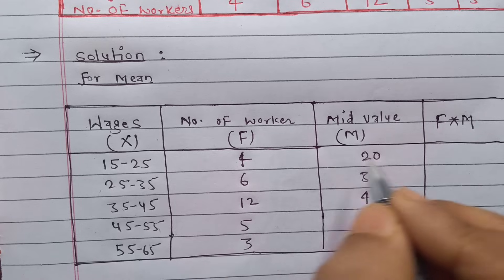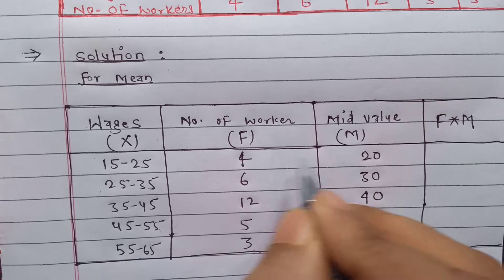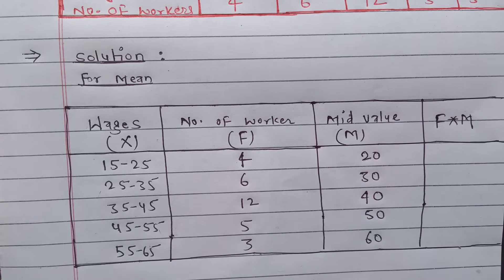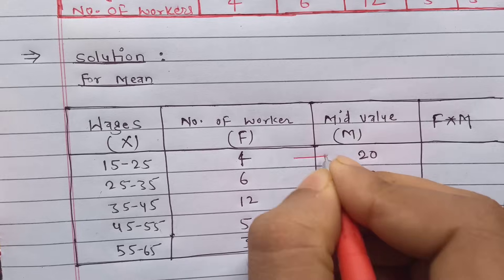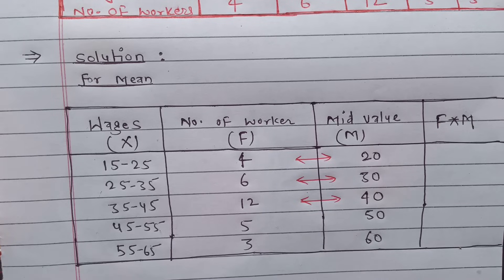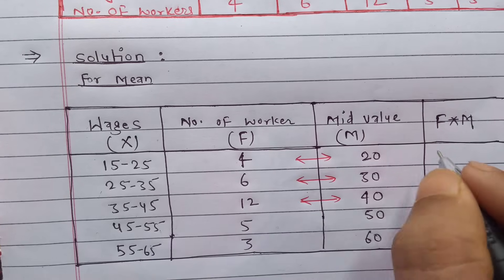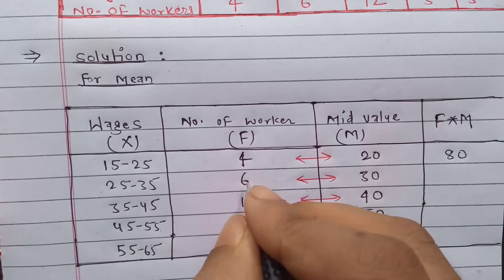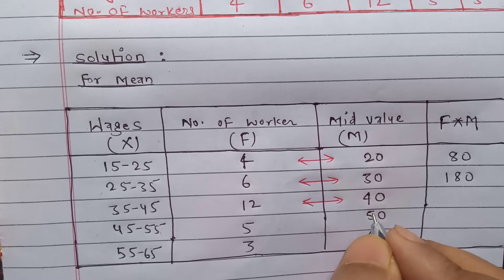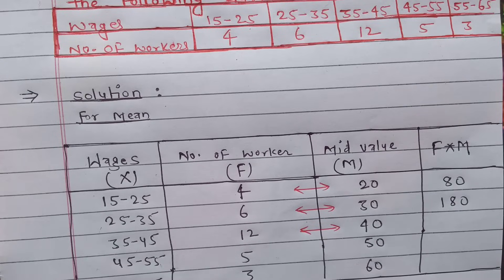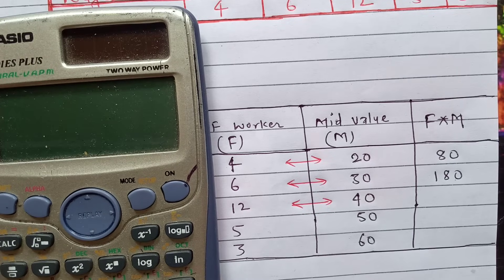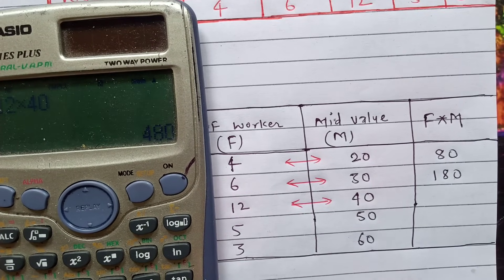Now we calculate F×M — that means we multiply each frequency by its corresponding mid value. So 20 × 4, 30 × 6, 40 × 12, and so on. We get: 20 × 4 = 80, 6 × 30 = 180, 12 × 40. If you have any confusion you can use a calculator. 12 × 40 = 480.